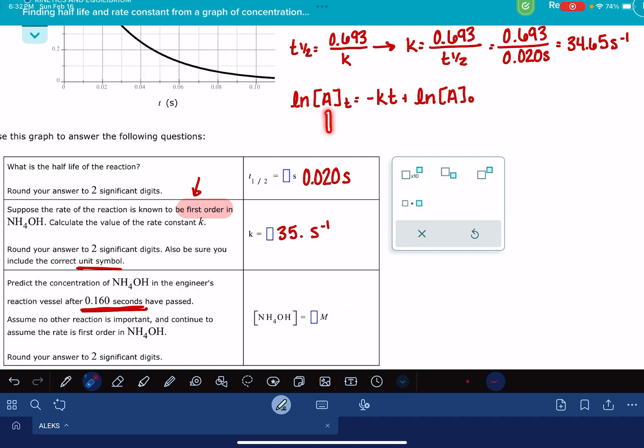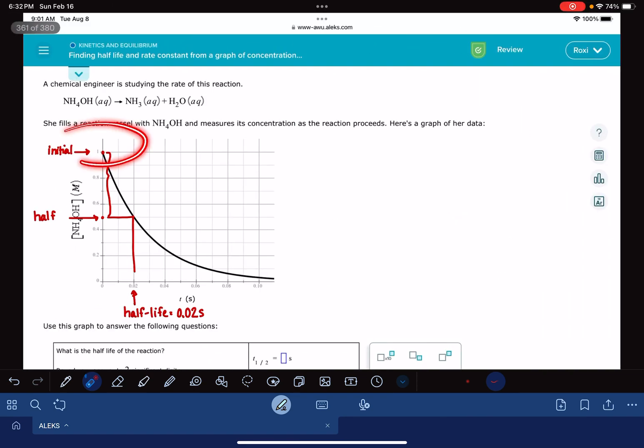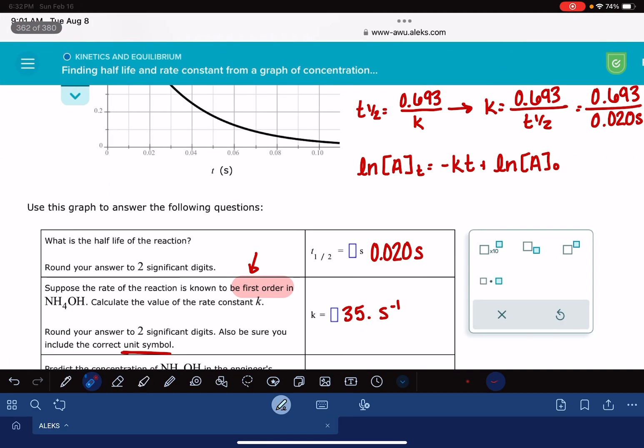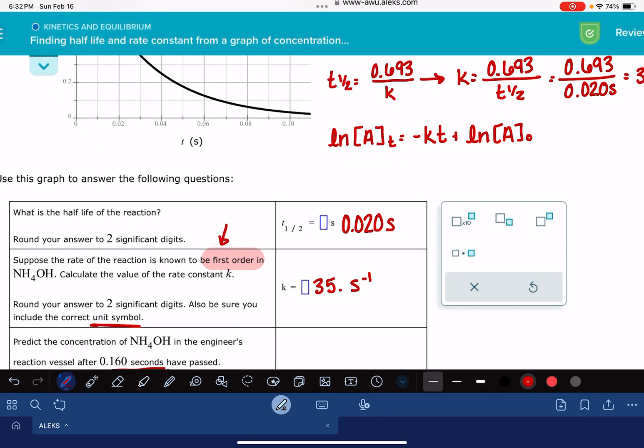The concentration of A at time T, that's what this problem is asking us to figure out. The rate constant k, we just solved for. The time is the time that was given to us in the problem. And the initial concentration of A, that is from our graph, the initial concentration of A. For mine, that initial concentration is 1 molar. So I'm going to plug in what I can.